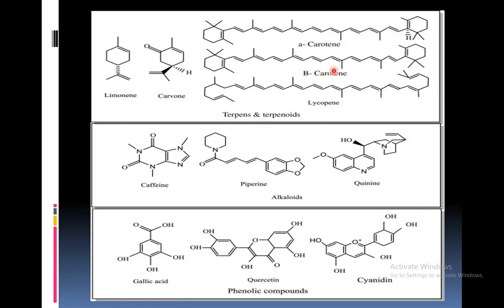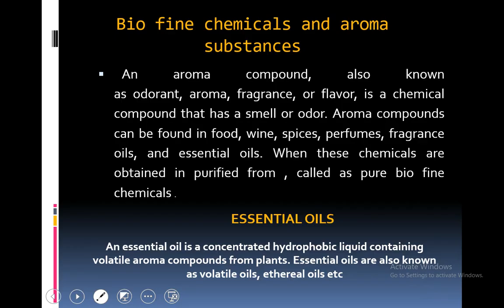alkaloids and phenolic compounds. You can see various examples of bioactive compounds including limonene, carvone, lycopene, beta-carotene, and terpenoids including alkaloids such as caffeine, piperine and quinine. Phenolic compounds include gallic acid, colistin and cyanidine. You can see the structure of various active compounds here.